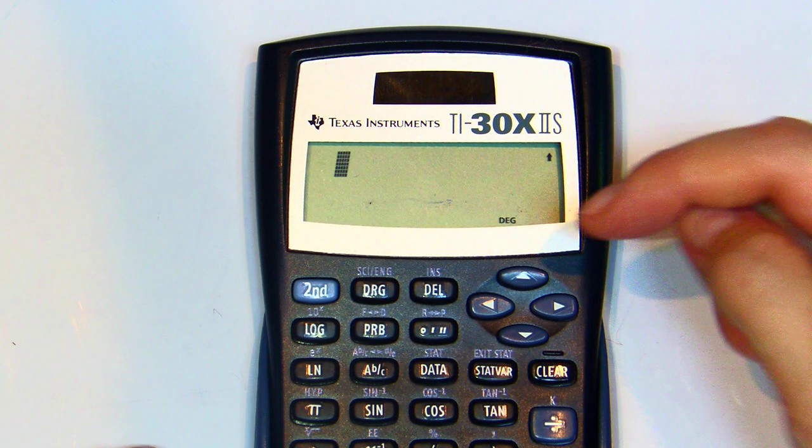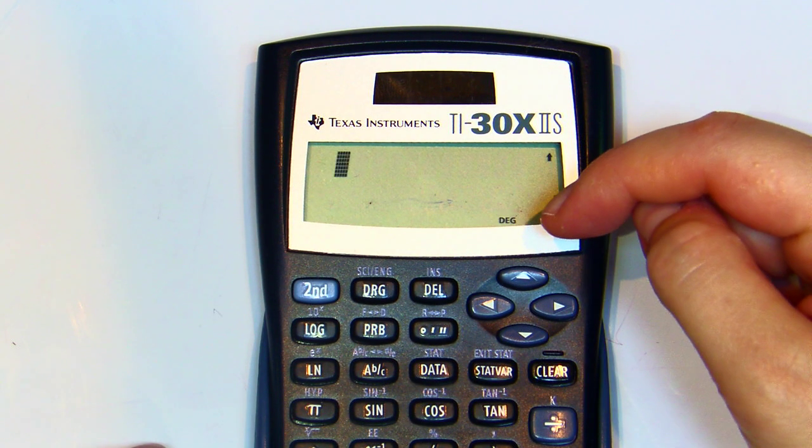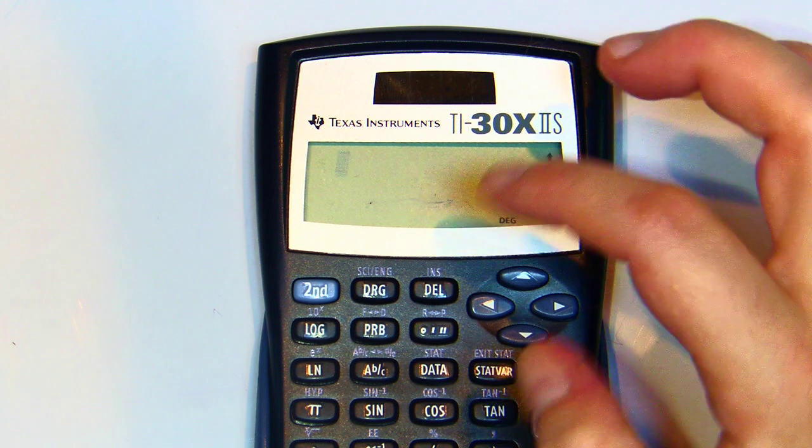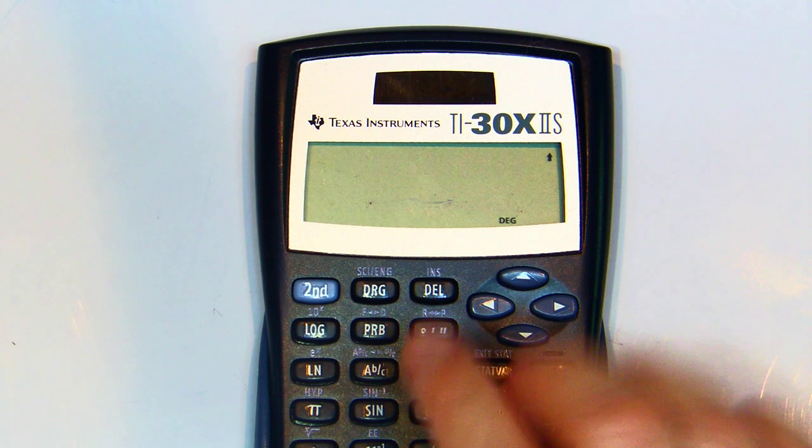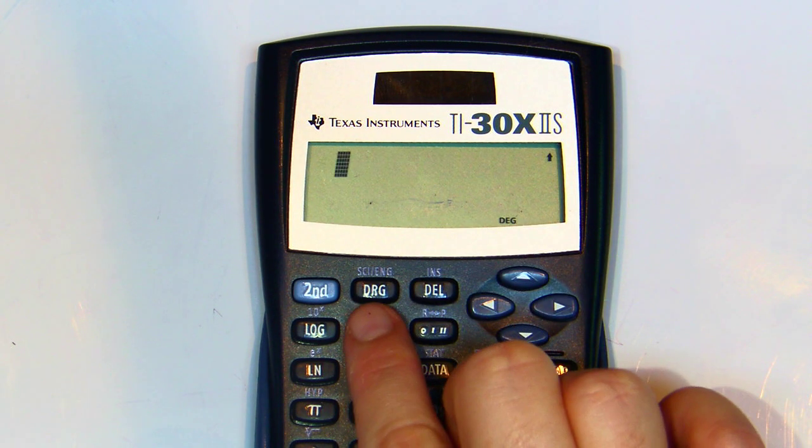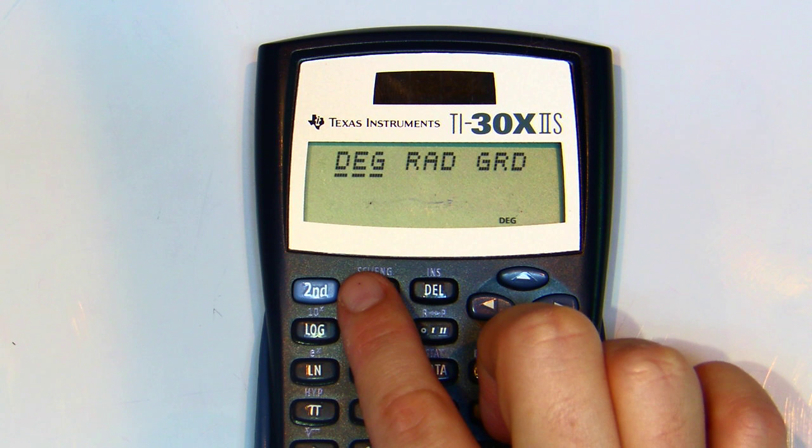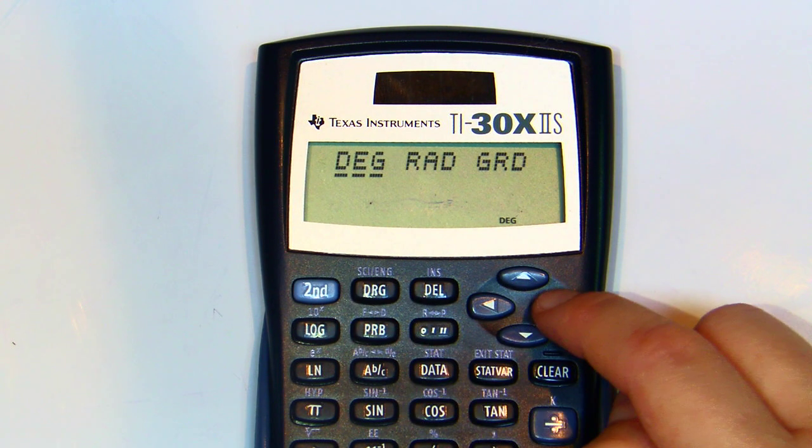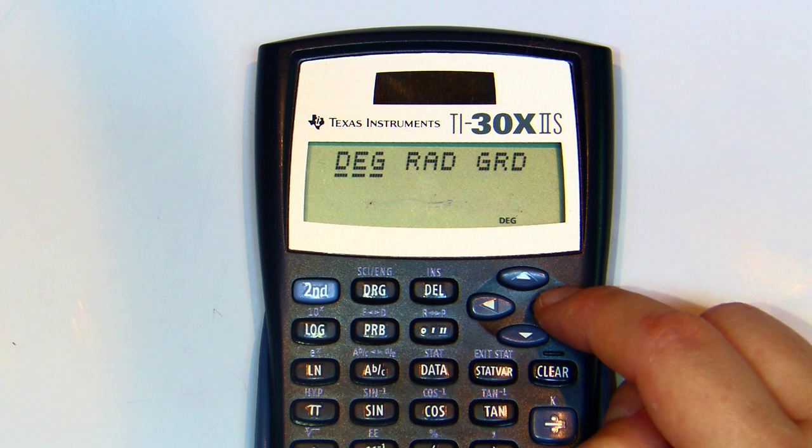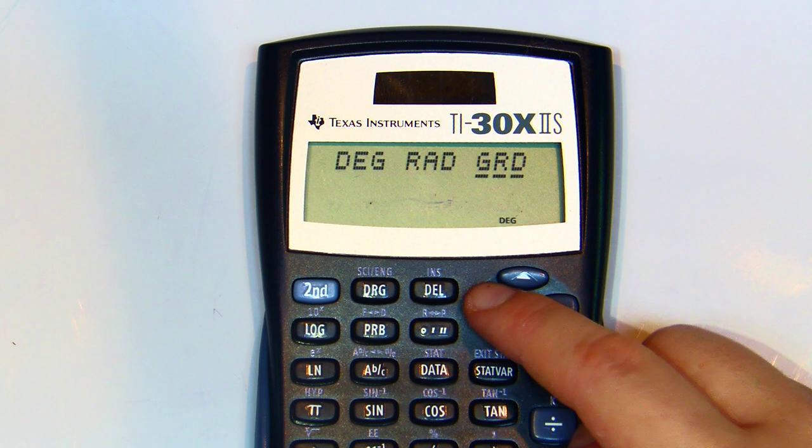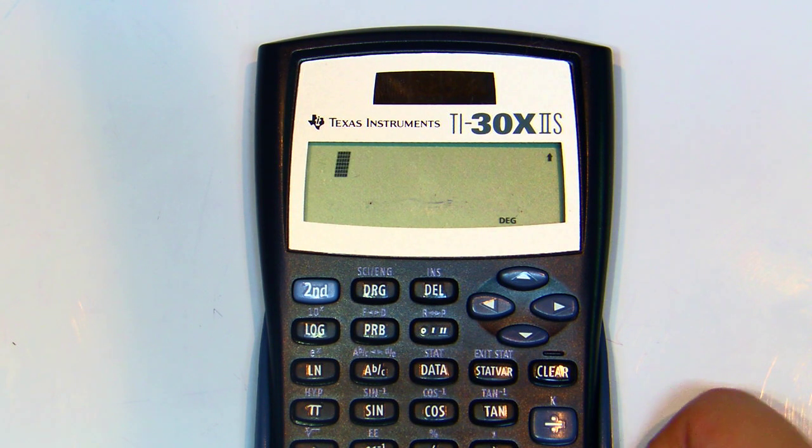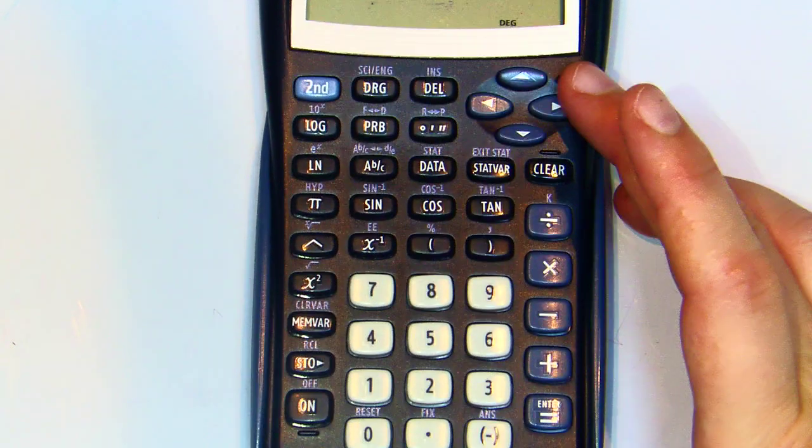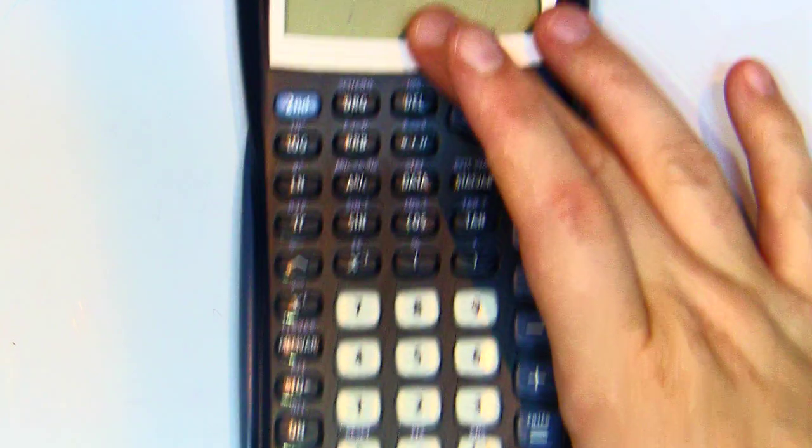So, you notice how it says DEG. That means that it's set to degrees. So, the DRG button stands for degrees, radians, or gradients. We want degrees. So, if it's set to radians or gradients, you'll get incorrect answers with a lot of these. We need it set to degrees. Just hit there, and then enter. Now, if you can't see my enter button, it is down here. But right now I'm focusing on more so the stuff up here.